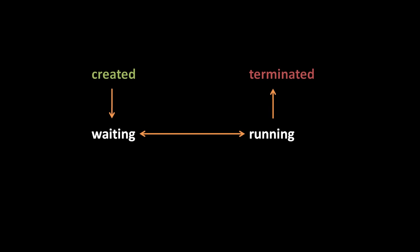When the scheduler selects a different process to run on the same core, this process is placed back into the waiting state. A process typically goes back and forth many times between waiting and running until the process ends, at which point it enters its final state, terminated.